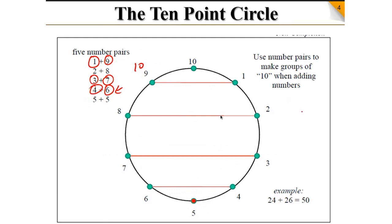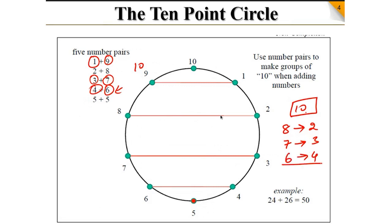The summation of two numbers is 10. If you already know one number is 8, the second number is 2, because 8 plus 2 is 10. If the first number is 7, the second number is 3. If one number is 6, the second number is 4, because 6 plus 4 is 10. You always have to find the numbers whose sum is 10.